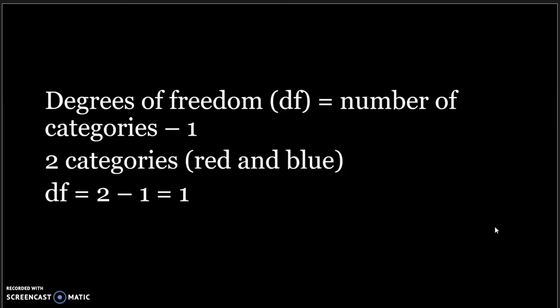The degrees of freedom is the number of categories minus one. We have two categories, red and blue, so we have one degree of freedom.